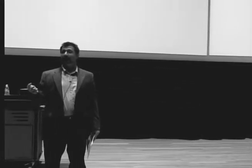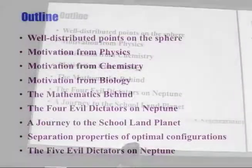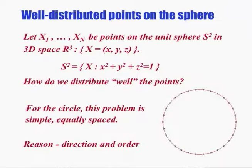Next topic: four evil dictators on Neptune. I'll actually present a mathematical proof, so those of you that were hoping not to see one, I hate to disappoint you. A journey to the school land planet — we'll talk about school districts; after all, it was in my subtitle. And some more serious section of my talk: separation properties of optimal configurations. And finally, the five evil dictators on Neptune.